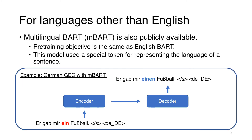Multilingual BART is pre-trained in the same way as English BART. In order to identify the language of the input sequence, a special language token is used. So when we use multilingual BART for German GEC, we set the special token representing German, as shown in the figure.